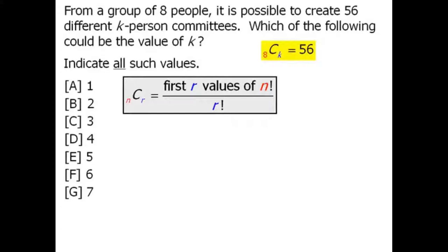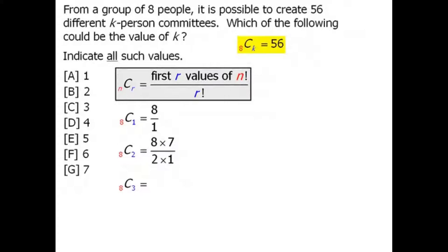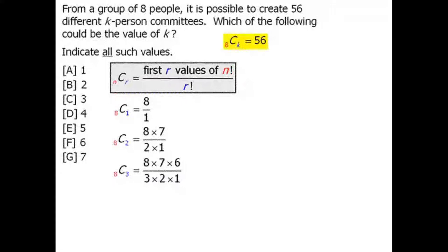For example, 8 choose 1 equals the first 1 value of 8 factorial divided by 1 factorial. Similarly, 8 choose 2 is the first 2 values of 8 factorial divided by 2 factorial. 8 choose 3 is the first 3 values divided by 3 factorial, and 8 choose 4 follows the same pattern. When we evaluate each of these, we find that 8 choose 3 is equal to 56.